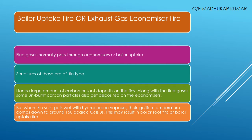When this soot combines with hydrocarbon vapor, the ignition temperature comes down to about 150 degrees Celsius. So as the ignition temperature comes down to this range, the boiler soot catches fire. The self-ignition temperature of soot is normally on the higher side, but along with the unburned carbon particles deposited with the soot, this lowers the ignition temperature down to 150 degrees Celsius — and then the soot fire starts.